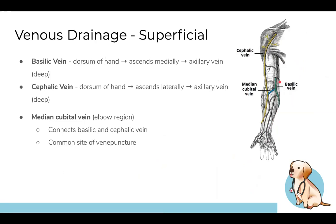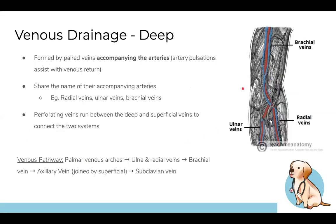Venous drainage is split into superficial and deep. Superficially: the basilic vein starts from the back of the hand, travels up medially, and transitions to deep drainage, joining the axillary vein. The cephalic vein starts on the dorsum of the hand, ascends laterally, then joins the deep system near the top. The median cubital vein connects the two superficial veins and is commonly used for venipuncture (blood draws) because it's easy to visualize.